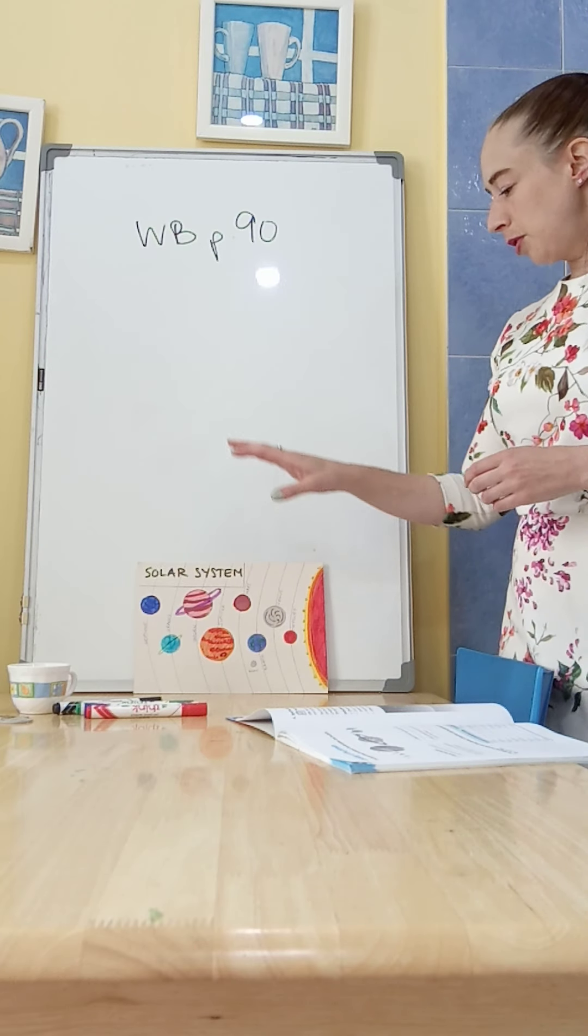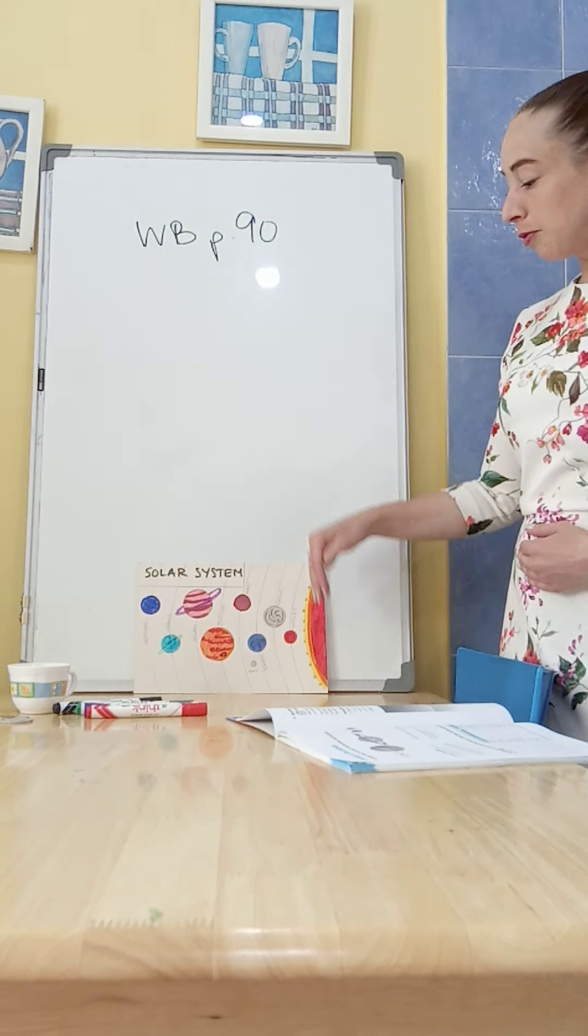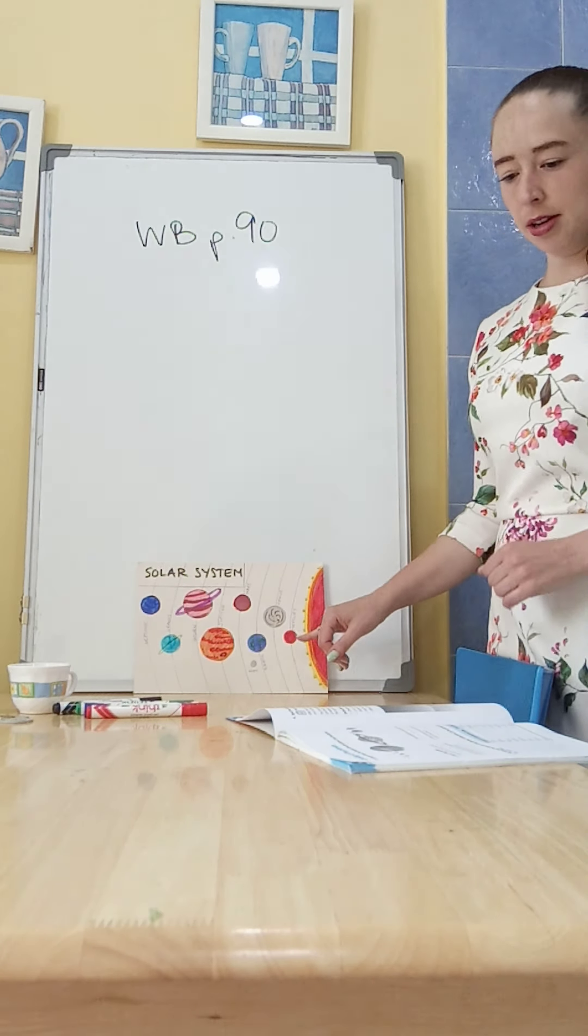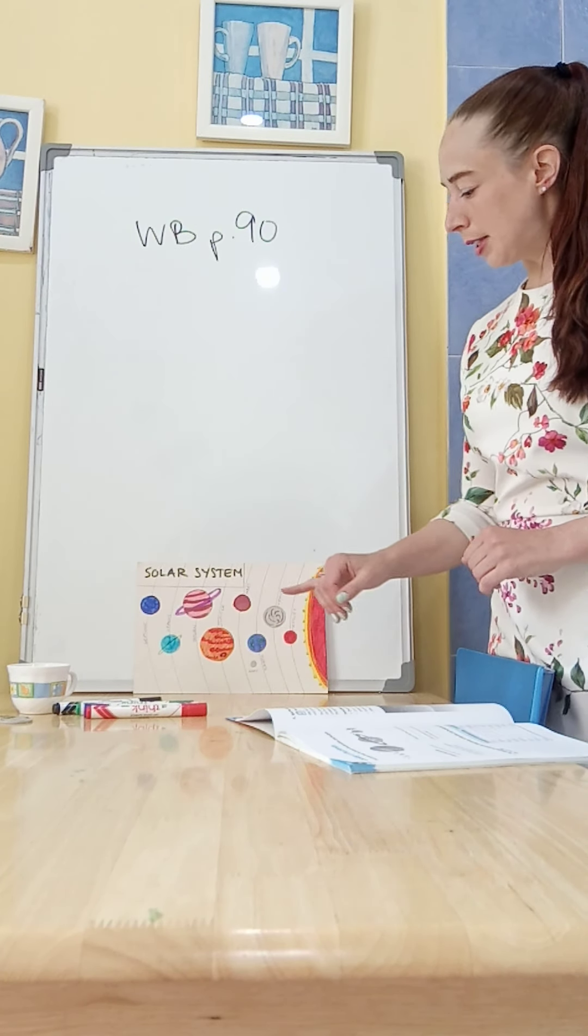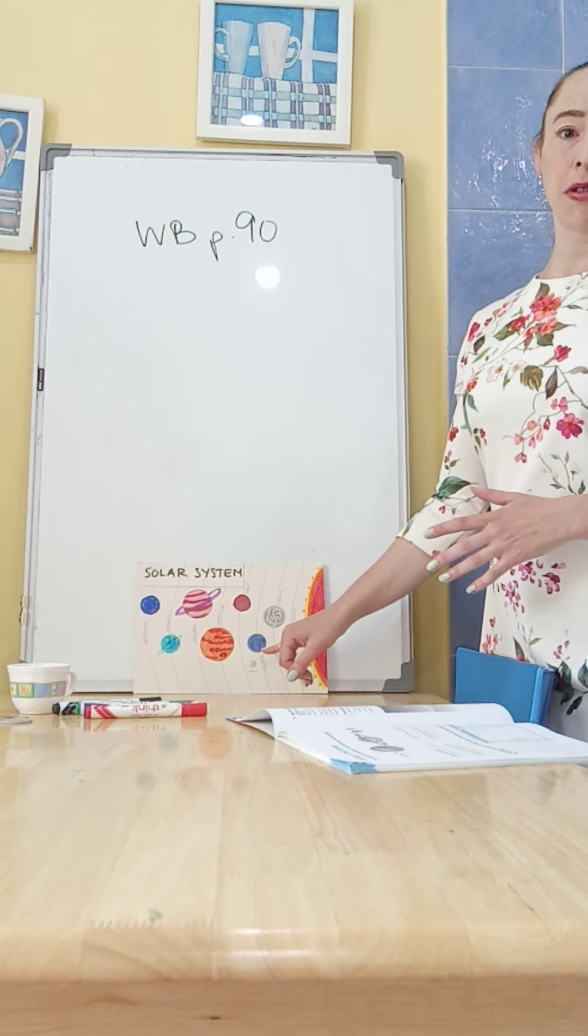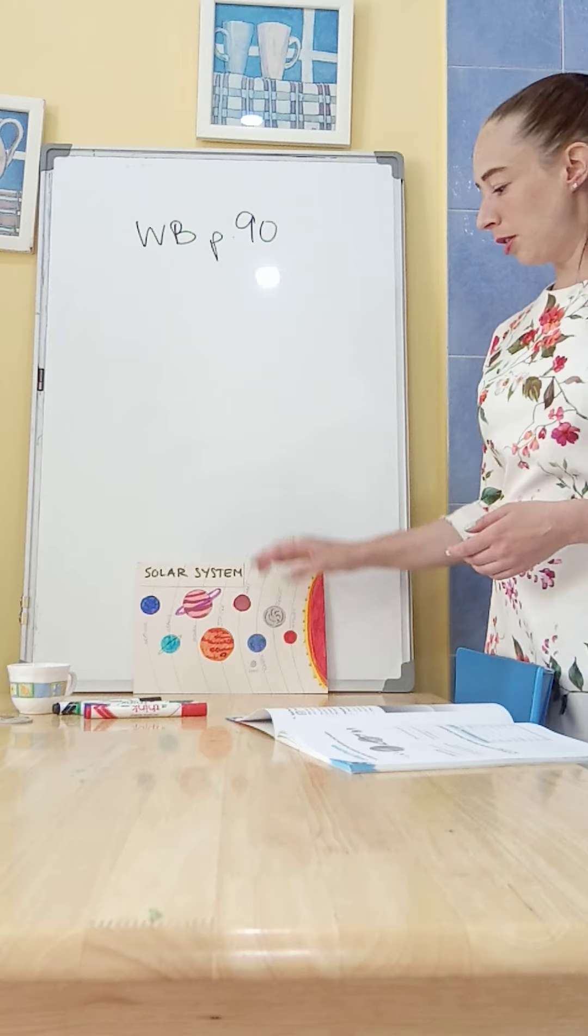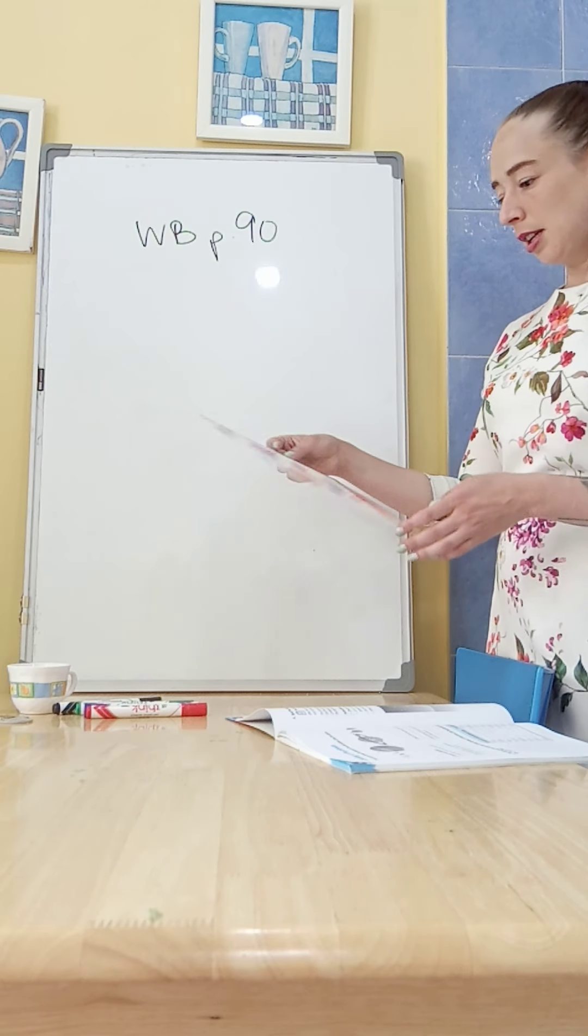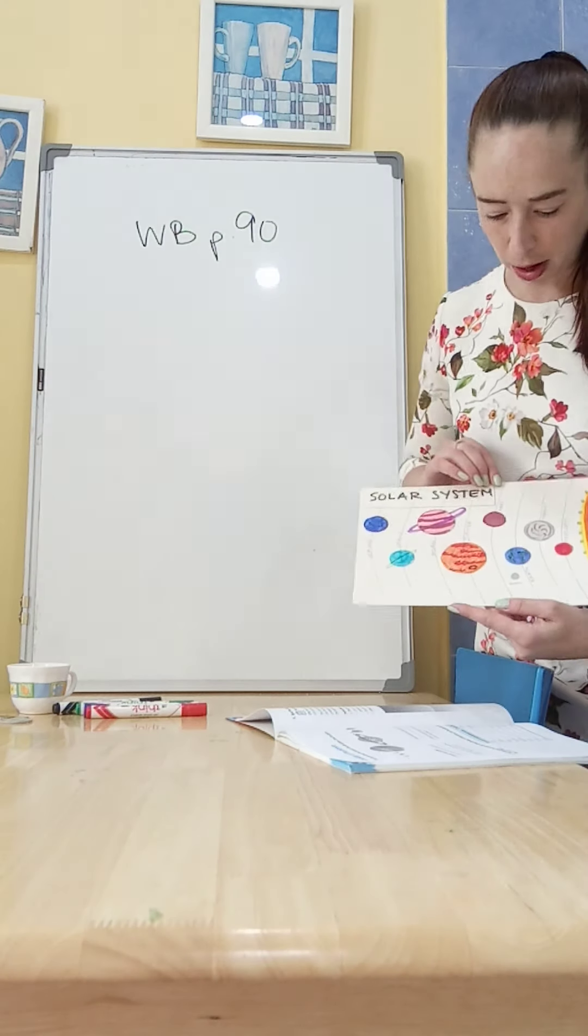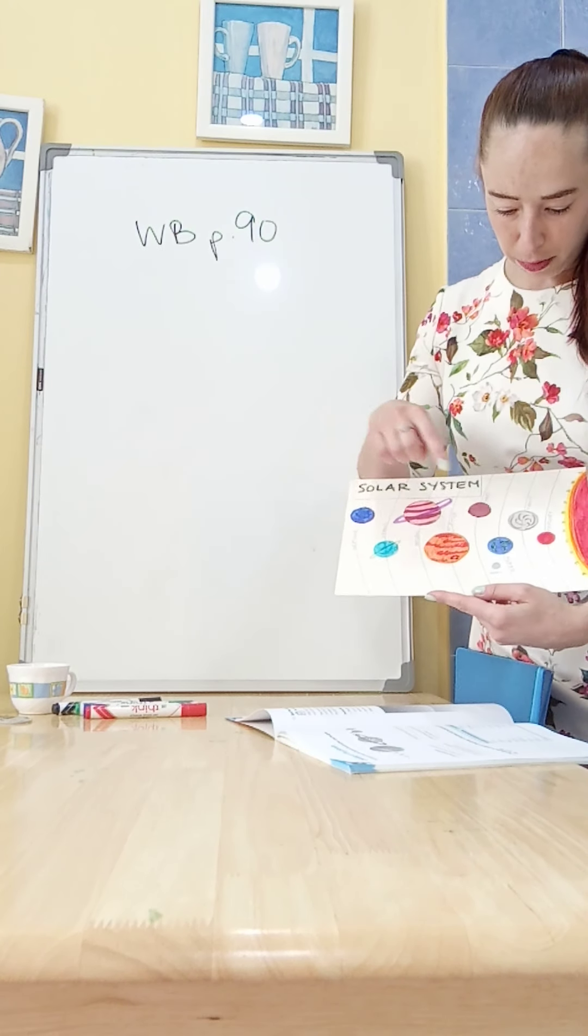You have to have your planets in the right order. So closest to the sun is Mercury, farthest from the sun is Neptune, and there's Earth which is the third closest planet to the sun. You see that I have sort of the right sizes as well.